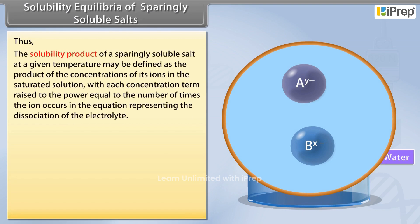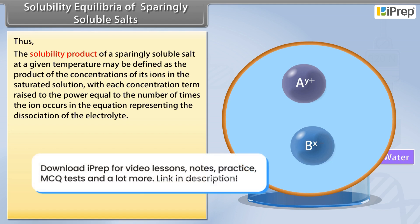Thus, the solubility product of a sparingly soluble salt at a given temperature may be defined as the product of the concentrations of its ions in the saturated solution, with each concentration term raised to the power equal to the number of times the ion occurs in the equation representing the dissociation of the electrolyte.